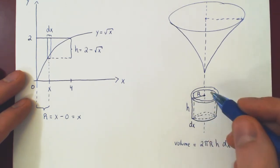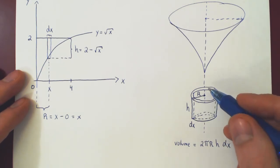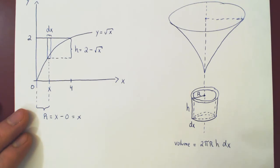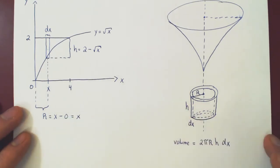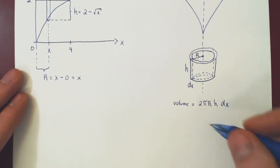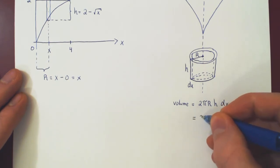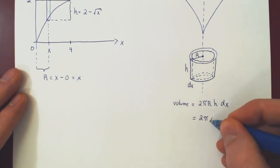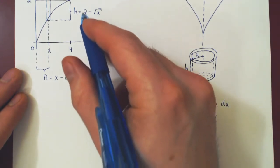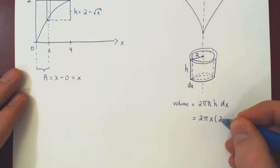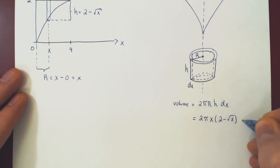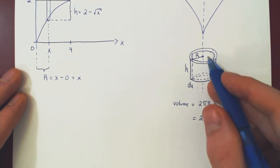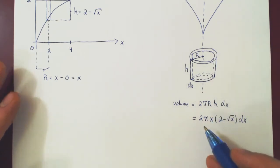Now we have found the radius and the height, so we can substitute in. The volume of a small cylindrical shell is 2 pi times the radius x, times the height 2 minus root of x, times the thickness dx. Written more precisely: 2 pi x times (2 minus x to the one half) dx. Now we have the volume of a small cylindrical shell.